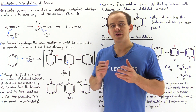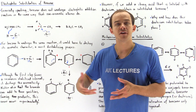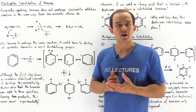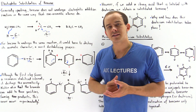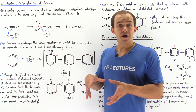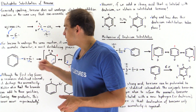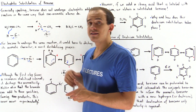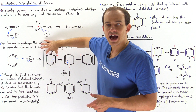To answer this question, let's look at the hypothetical electrophilic addition reaction of benzene with HBr. Let's imagine that this reaction does in fact take place and examine the reaction mechanism, comparing the products to our reactants. One of the pi bonds of benzene grabs the H, displacing the bromide and forming the bromide ion and a carbocation.